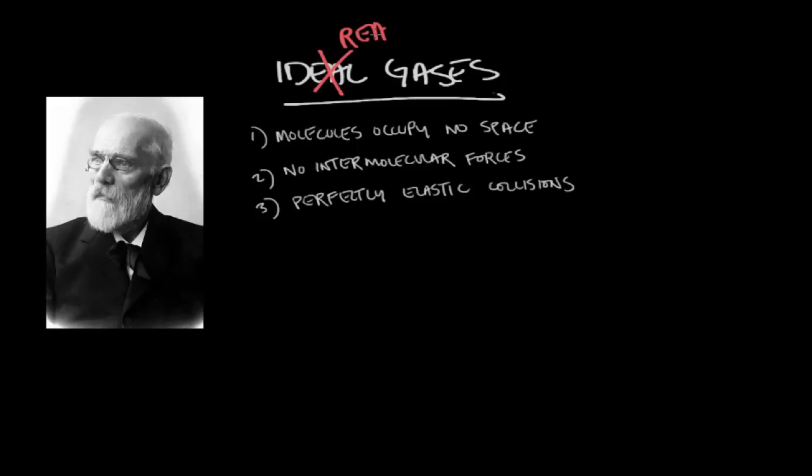So what I want to do is review the conditions of an ideal gas, and we'll see where these deviations for real gases occur. First, we said that an ideal gas is one that has molecules that don't occupy any actual space. And a real gas particles do occupy space. It's a microscopic amount of space, but it's real.